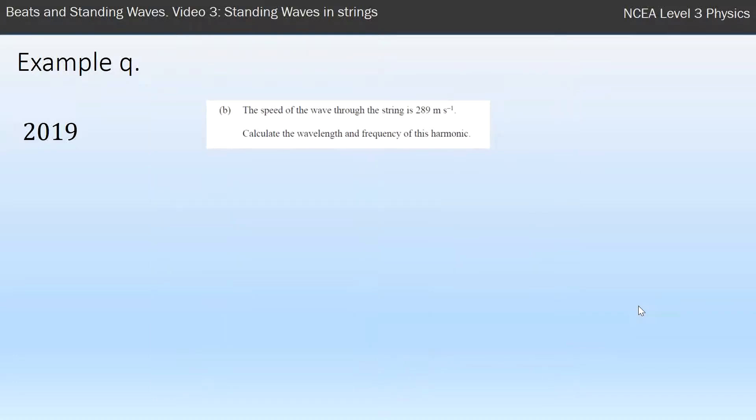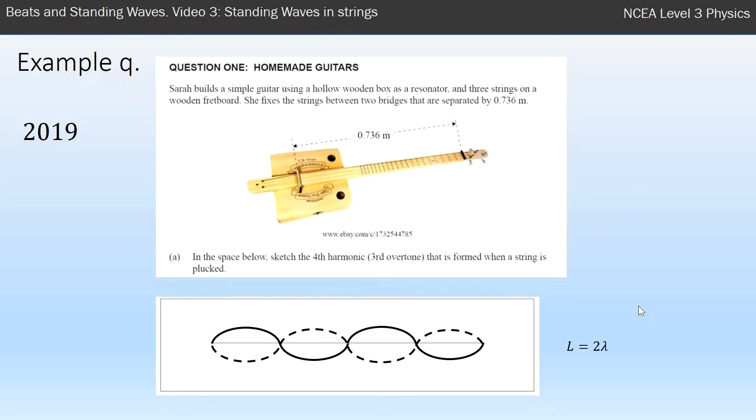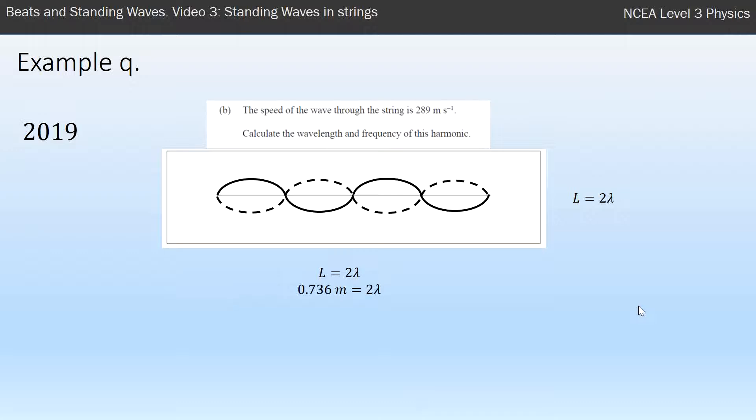The next question says the speed of the wave is 289, calculate the wavelength and the frequency of this harmonic. So first up, I've got L equals two lambda. I can just rearrange that because I know the length of the string they gave me in the opening question was 0.736, so 0.736 is equal to two waves, rearrange for the wavelength and I get 0.368. Then I can just put that into the wave equation—they've given me the speed and I've now got the wavelength, and so I can work out the frequency. So that'd be an easy merit question for me.